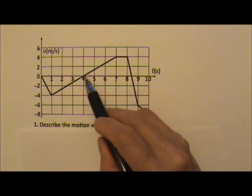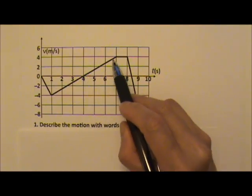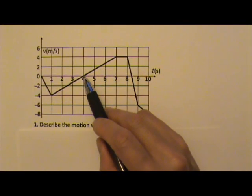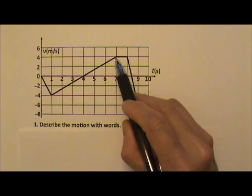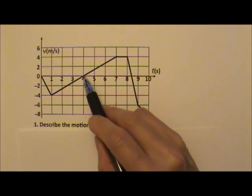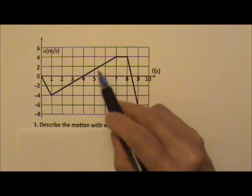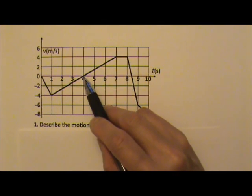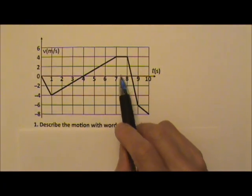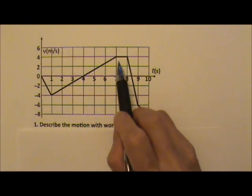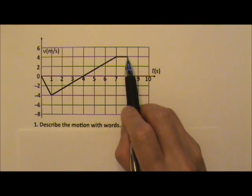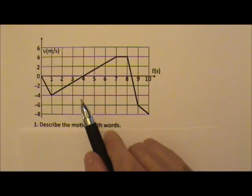And then it speeds up. Now its velocity between 4 and 7 is positive. The object now travels in the positive x direction for the next 3 seconds, and it speeds up to 4 meters per second from rest. Then between 7 and 8 seconds, the velocity stays a constant 4 meters per second in the positive x direction.